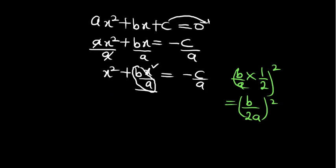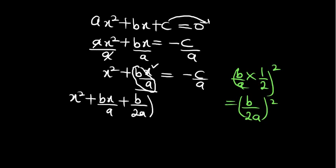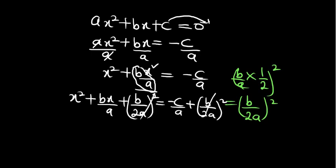We are now going to be having x² plus bx over a plus (b over 2a)² equals minus c over a plus (b over 2a)². Automatically, even if we were to cancel it back, we would come back to the same answer, so everything we are doing is not wrong — we are just expressing it in another way.